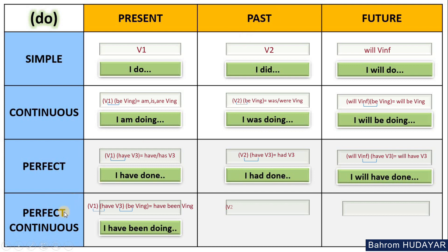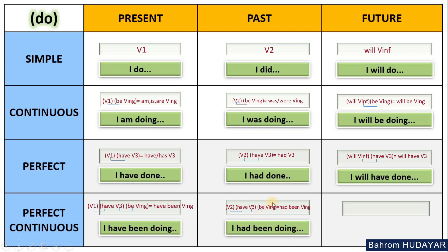Past Perfect Continuous: past — verb two — perfect — have + verb three — continuous — be + verb-ing. Do the multiplication. The second form of 'have' is 'had', and the third form of 'be' is 'been', so: 'had been + verb-ing' — 'had been doing something.' Full sentences: 'I had been doing something good', 'you had been doing something bad.' Note: these sentences are not complete — you should complete them — but the tense part is what's most important.